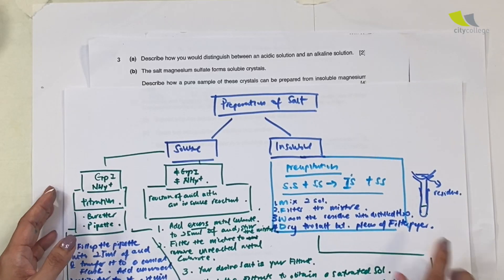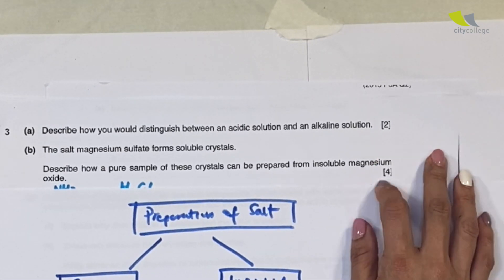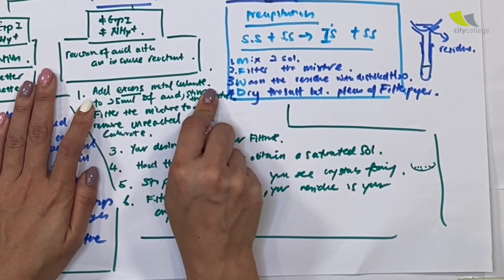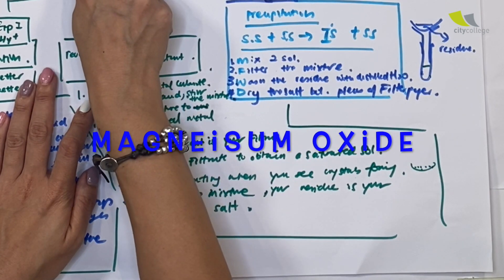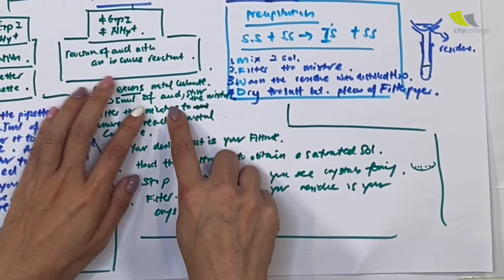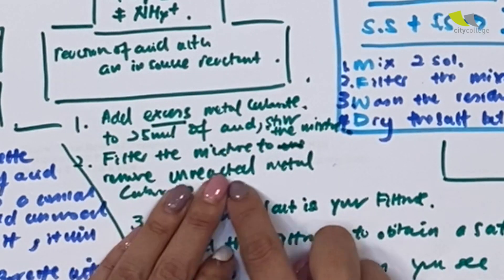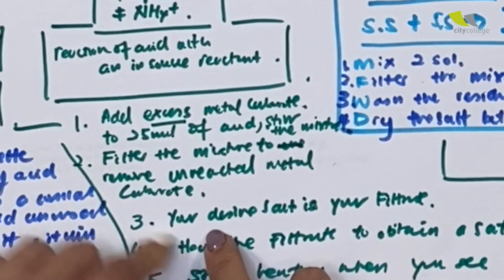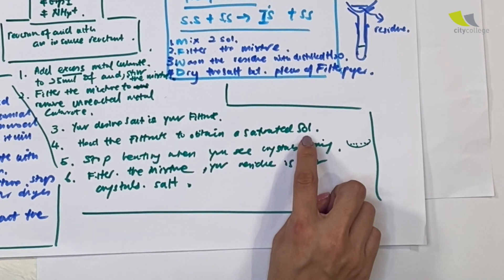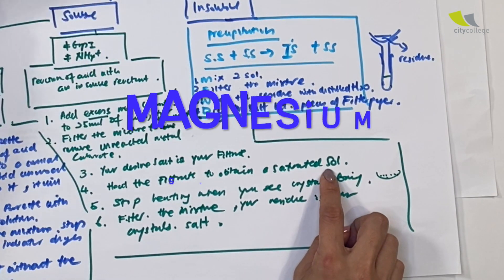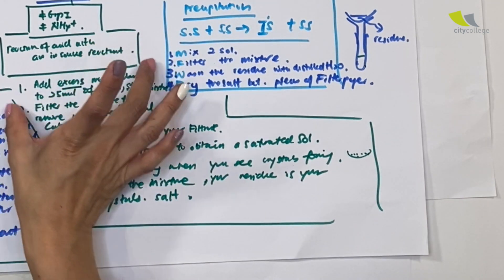Describe how a pure sample of this crystal can be prepared from insoluble magnesium oxide. They give you the starting compound, magnesium oxide. So add excess magnesium oxide to 25 ml of sulfuric acid — because it's sulfate. Stir the mixture. Filter the mixture to remove the unreacted magnesium oxide. The desired salt is the filtrate. Then heat the filtrate to obtain a saturated solution of magnesium sulfate. Stop heating when you see crystals forming. Filter the mixture and the residue is the crystal salt. Very simple, just by following the steps.